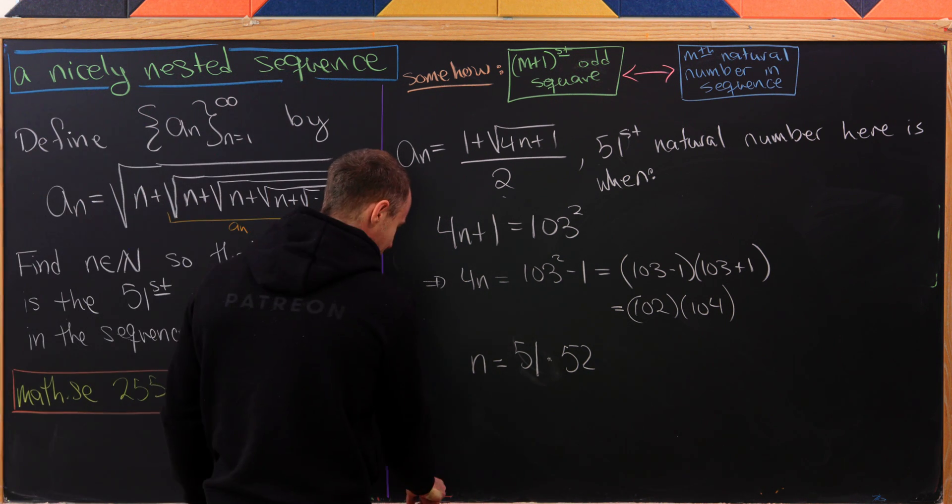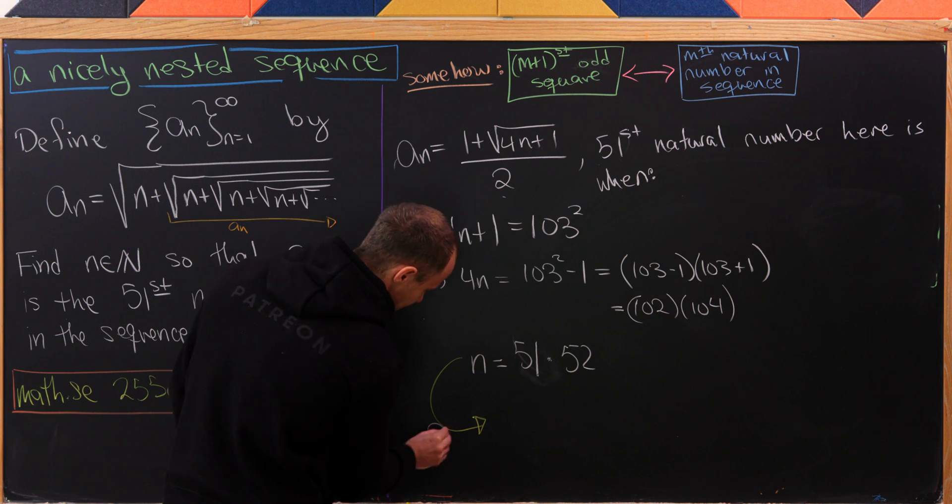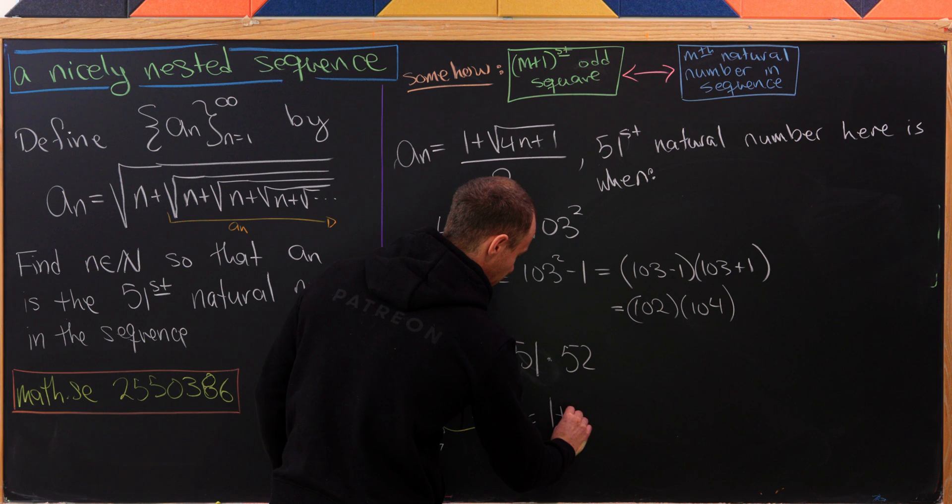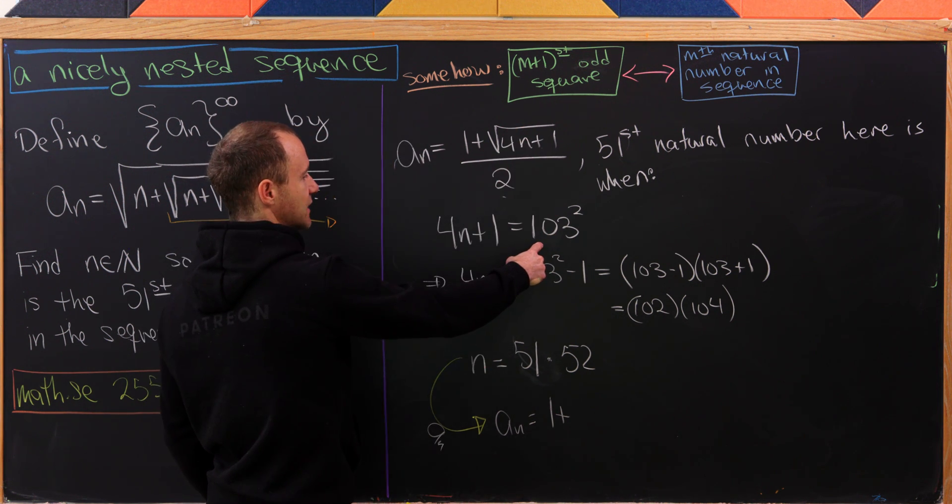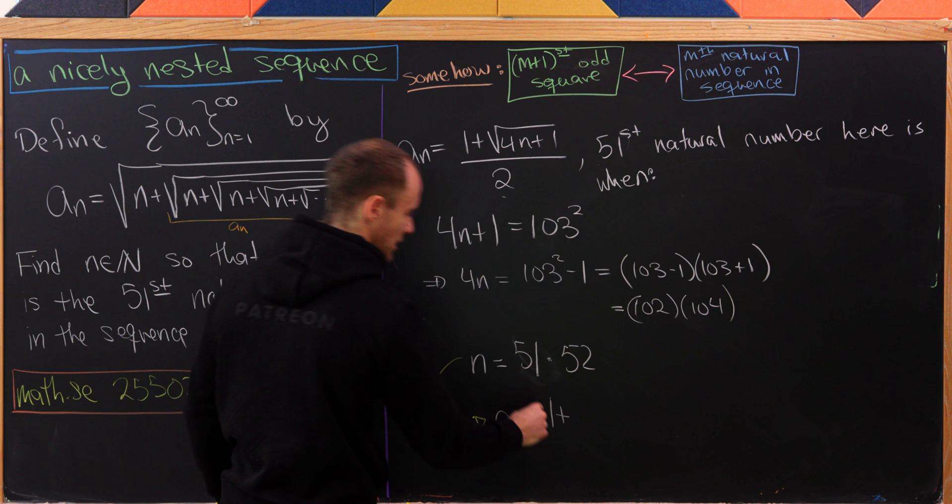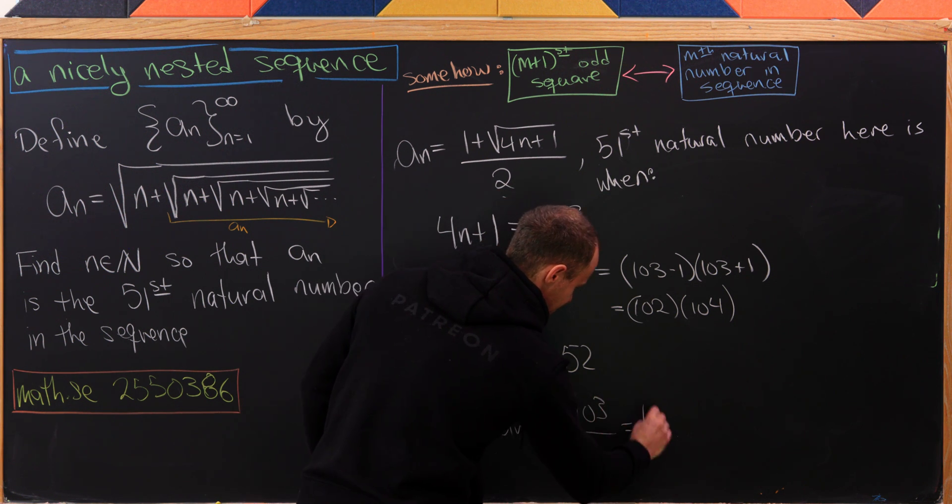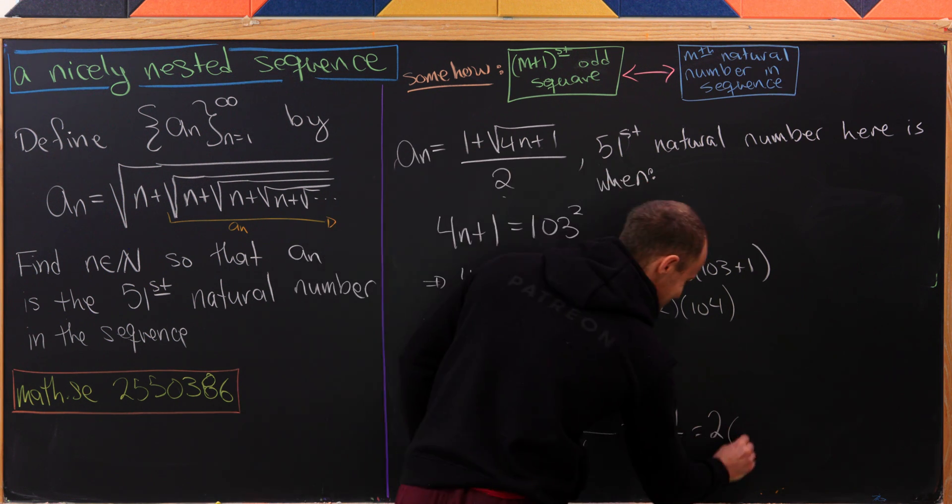You might say, what is the value of a_n in this case? Let's calculate it. We'll have a_n equals 1 plus, well I don't need to do this calculation because I already know this is 103 squared. I take the square root, I get 103 over 4. That's going to be 104 over 4, which equals 26.